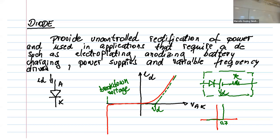A diode may have other applications, particularly at high frequency. In our case, we use diodes in the way we've learned: when the voltage on the anode (A) is greater than the voltage on the cathode (K), the diode conducts. Last class I was giving this example to a student.